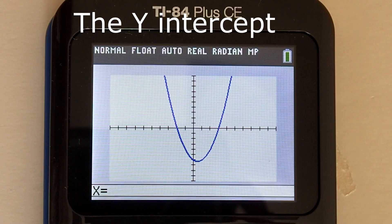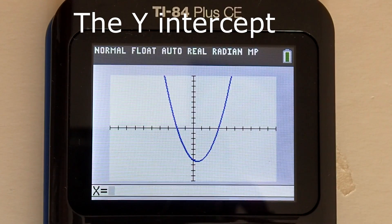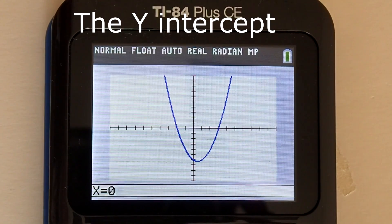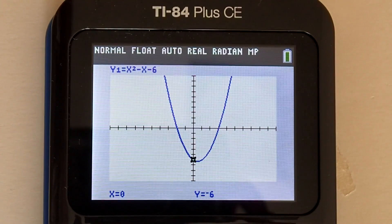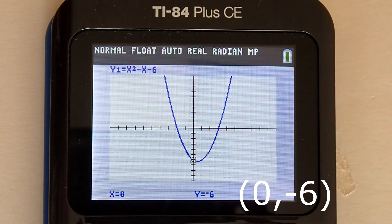The y intercept occurs when x equals 0. So on the bottom of the screen type 0 after x equals. Then press enter. And at the bottom of the screen there is our y intercept at y equals negative 6.